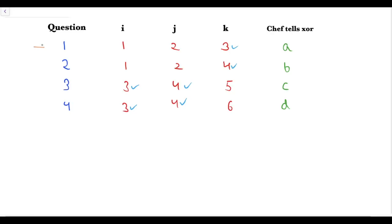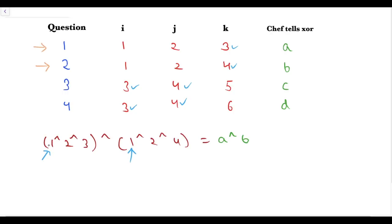Now let's take the XOR of the first and second questions. A[1] XOR A[2] XOR A[3] XOR A[1] XOR A[2] XOR A[4] equals A XOR B. The A[1] terms cancel and the A[2] terms cancel, giving us A[3] XOR A[4] equals A XOR B. Since A and B are known, we now know the value of A[3] XOR A[4].